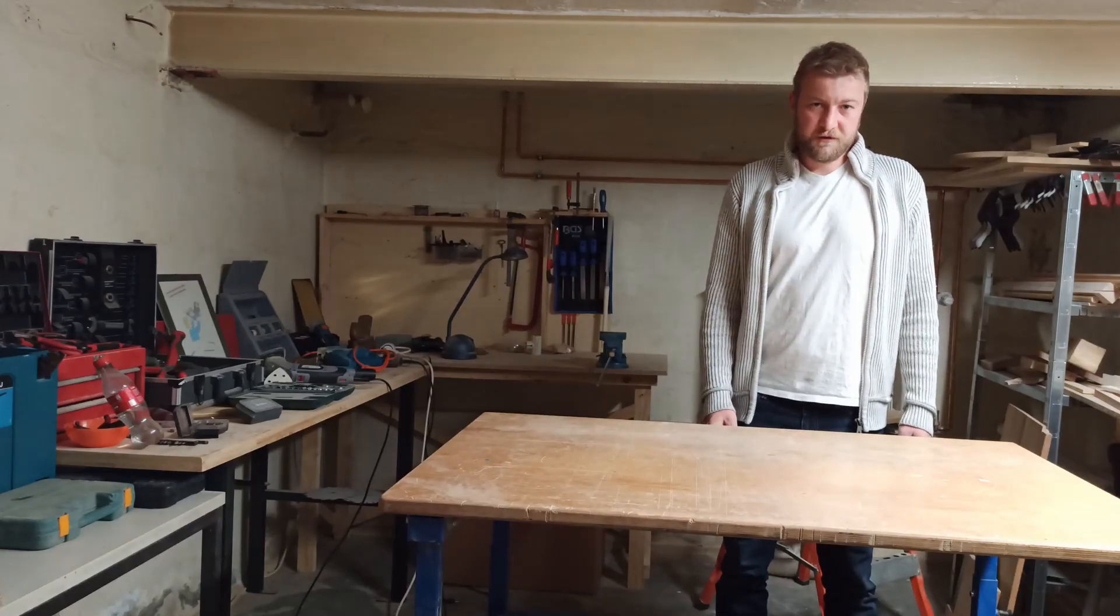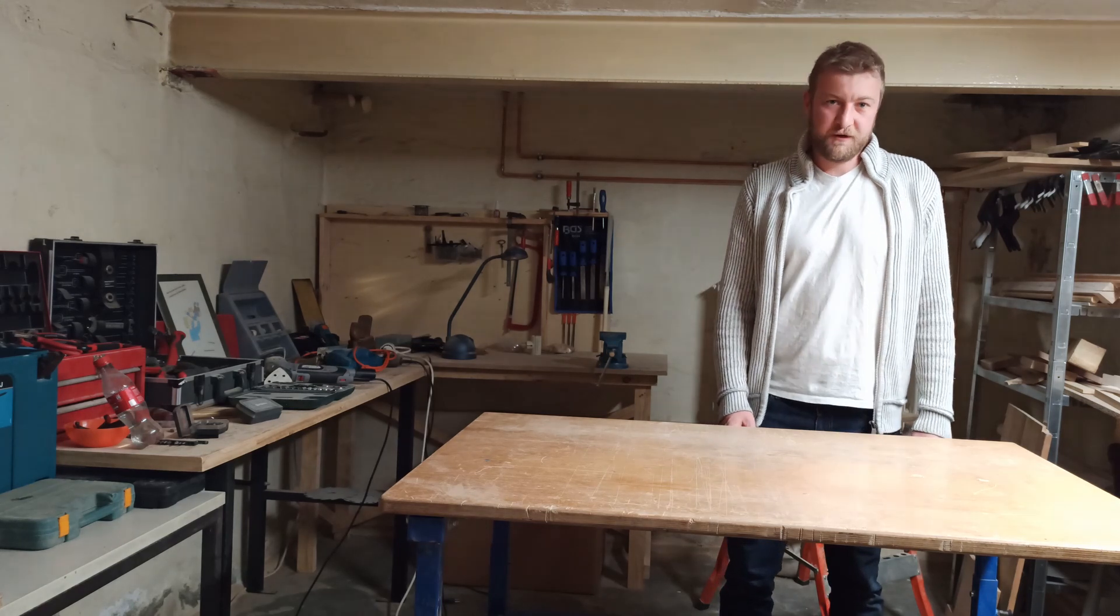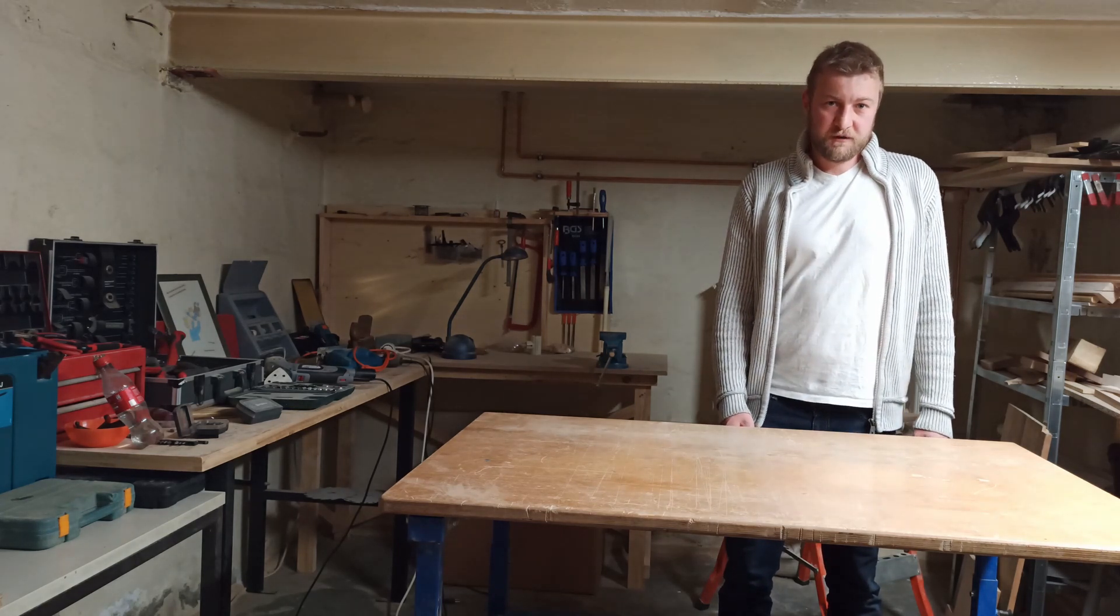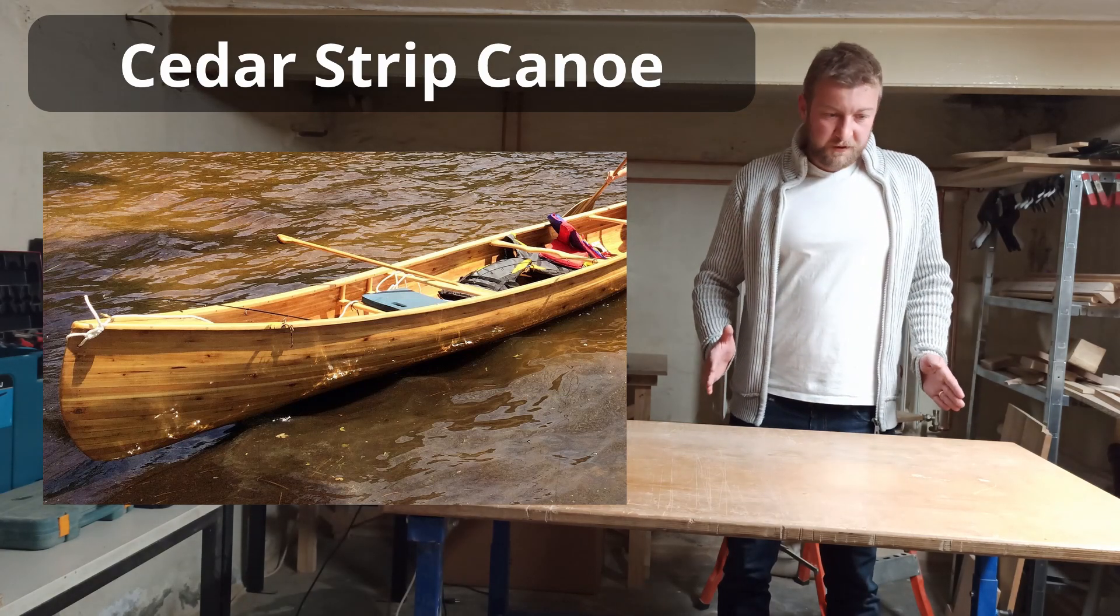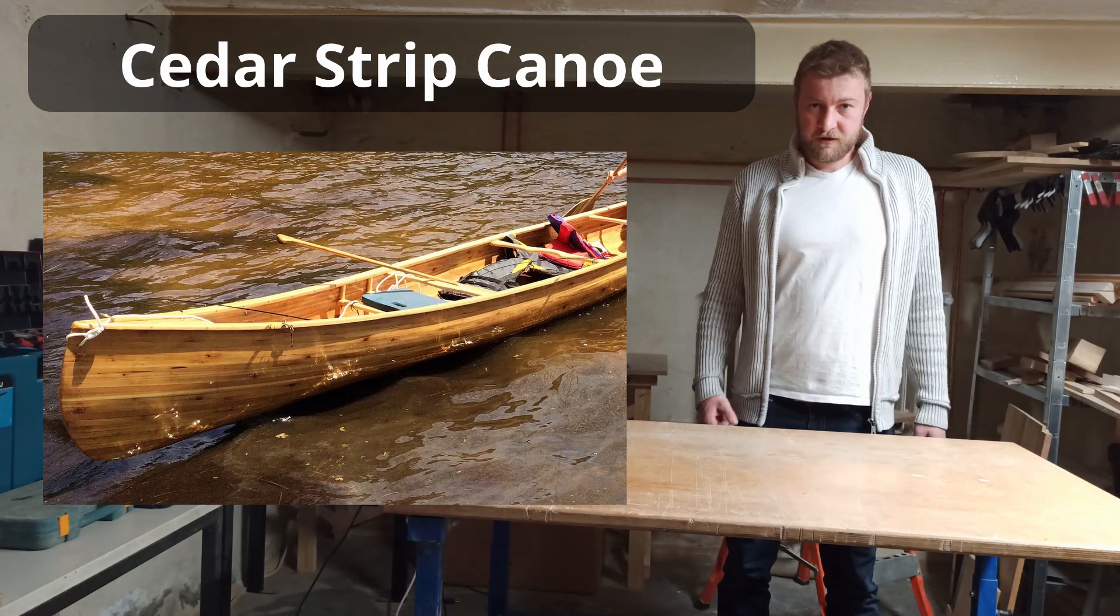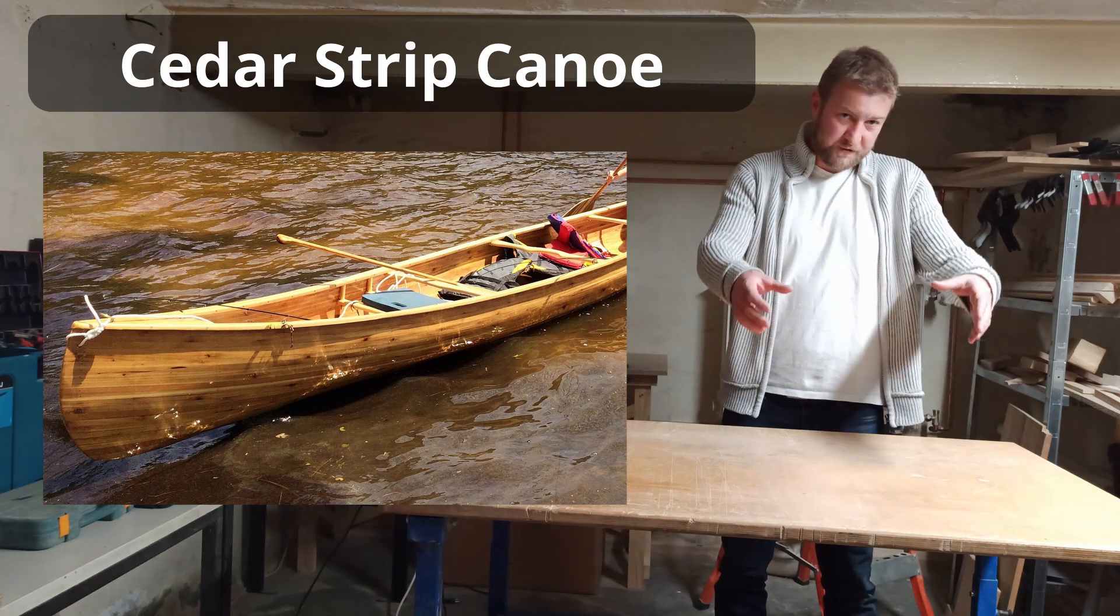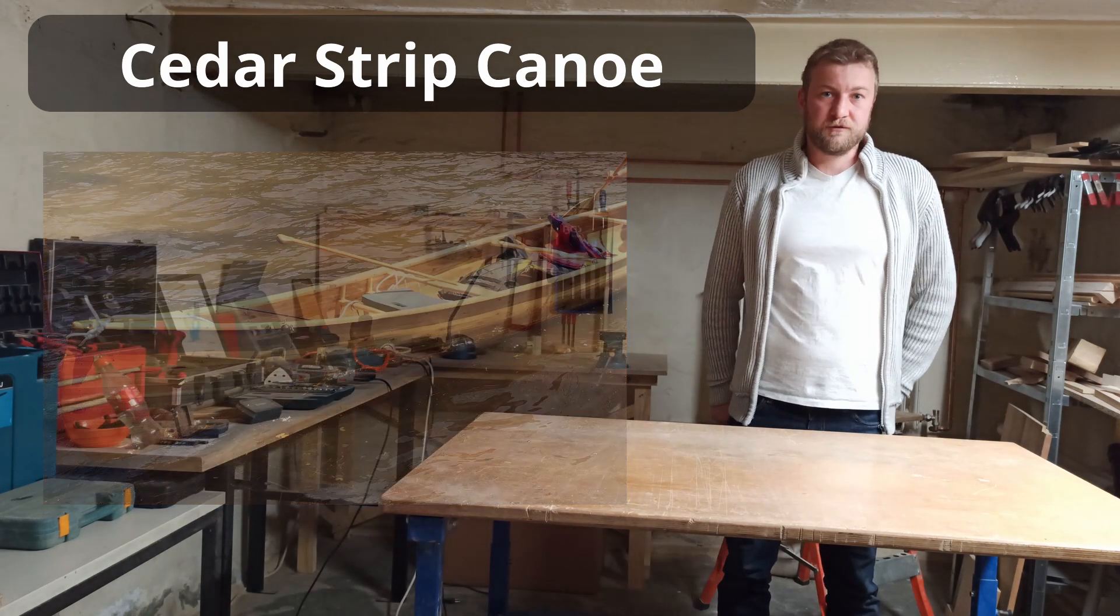I wanted to make this canoe from wood and I found basically four ways to do so. The first one is the cedar stripe canoe where you have wooden frames which are covered by thin cedar stripes until the hull is completely closed.